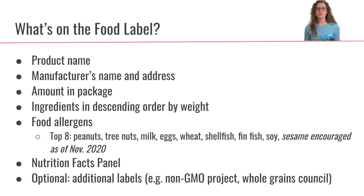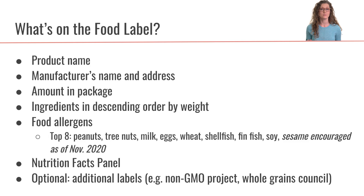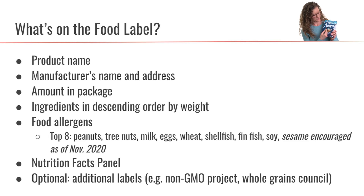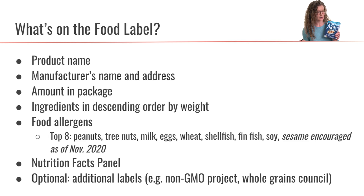The first thing we want to talk about is what are the requirements according to the FDA that have to be on a food label. The first is pretty obvious: the product name. So we have to have the product name on our food label — we have Alpen muesli right here.